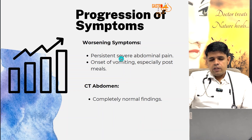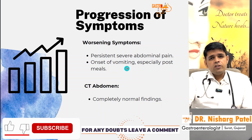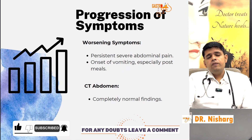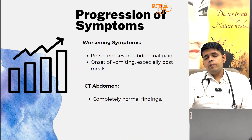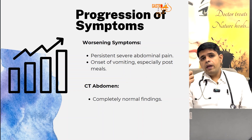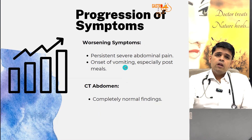Note that there was persistent severe abdominal pain and immediate post-meal vomiting. As we have discussed in previous videos on vomiting, if there is abdominal pain which is colicky in nature and immediate post-meal vomiting, then we need to think of any metabolic problem, any central problem, functional GI disorder, or some drug-related problem.